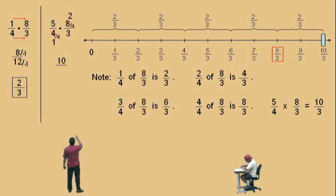Ten. Professor Perez: And on the bottom, 1 times 3 is what? Three. Professor Perez: It's 3. So, 10 thirds. So, 5 fourths times 8 thirds is 10 thirds. There it is over there on the number line.